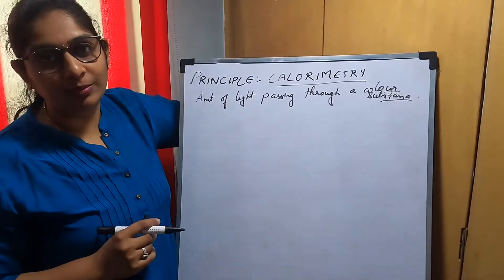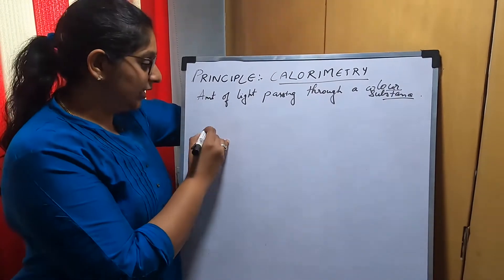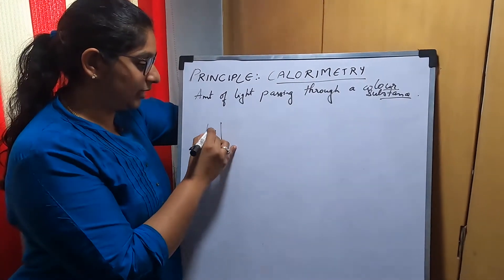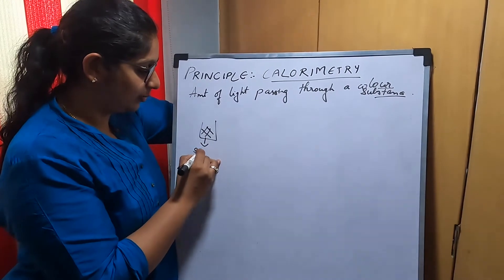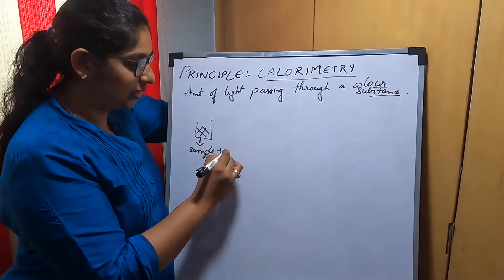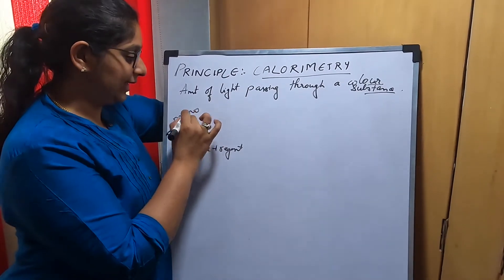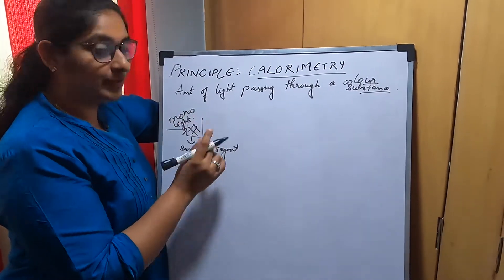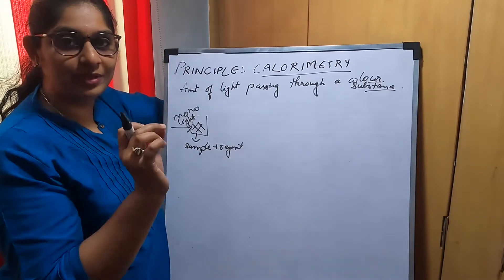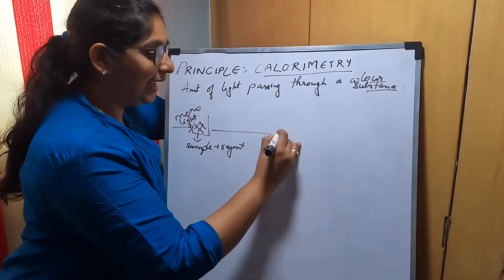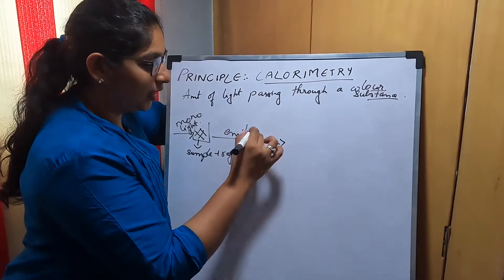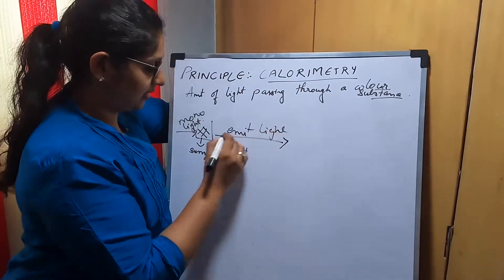In a fully automated biochemistry analyzer, a color complex is formed by the sample along with the reagent. When we pass a monochromatic light, which means a single light source with a single color, it will emit light from this complex.